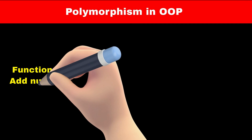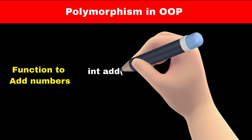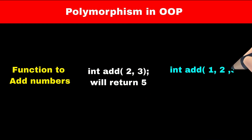Now let's understand what is polymorphism in object oriented programming. Consider we create an add function for adding numbers. If we pass two numbers to this function then it will add two numbers, and if we pass three numbers then it will add three numbers. That means one function is having multiple forms. So two or more functions can have the same name but different parameters or functionality. This is called polymorphism in OOP.